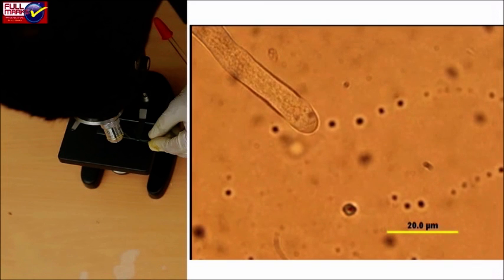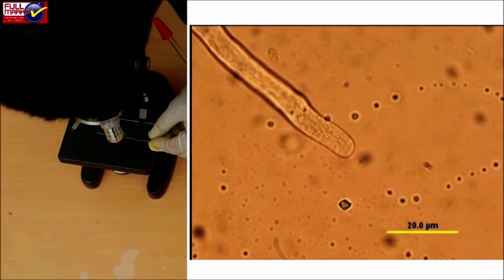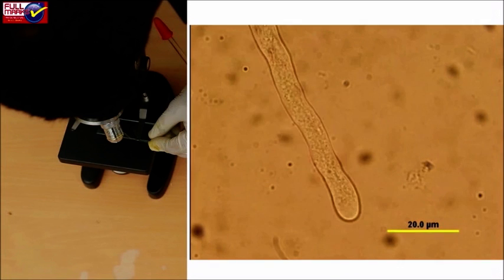The thin intine protrudes out through a germ pore into a slender pollen tube. Sugary substances secreted by the stigma stimulate further growth of the pollen tube which gradually elongates.